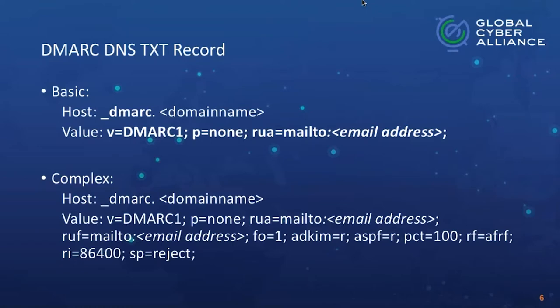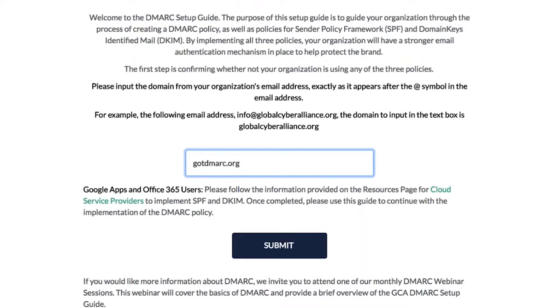A question came in: we have external third parties that send on our behalf — do we need to identify them and ensure their sending IPs are added to our SPF records? For SPF, yes — add them to your SPF record to authorize them. For DKIM, work with the third party directly — do not give them your public key, because you'd also have to give them the private key. Most third-party vendors handle their own DKIM configuration and simply give you the DNS record to create.